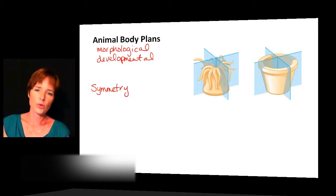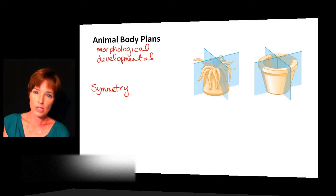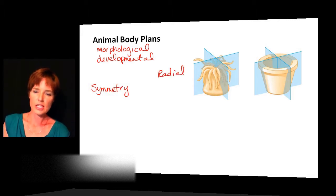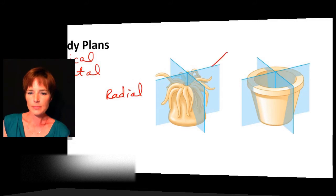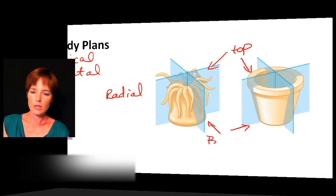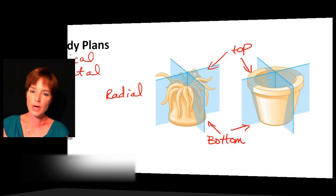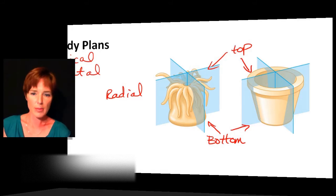How symmetric is the organism, or what type of symmetry do they have? There are a few animal groups that have no symmetry at all — those would be what we call asymmetric. Other than those, we have two main types of symmetry. The first one is what we call radial symmetry, and that's what you see in these pictures shown here. With radial symmetry, we have a top that is distinctively different from the bottom.